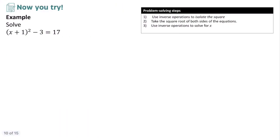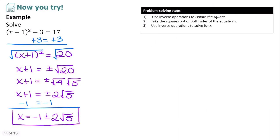Pause the video and try this example on your own. To isolate the square term, add 3 to both sides to get x plus 1 squared equals 20. Take the square root of both sides: x plus 1 equals plus or minus the square root of 20, which simplifies by factoring out the square root of 4 to give plus or minus 2 square root of 5. Subtract 1 from both sides: x equals negative 1 plus or minus 2 square root of 5.